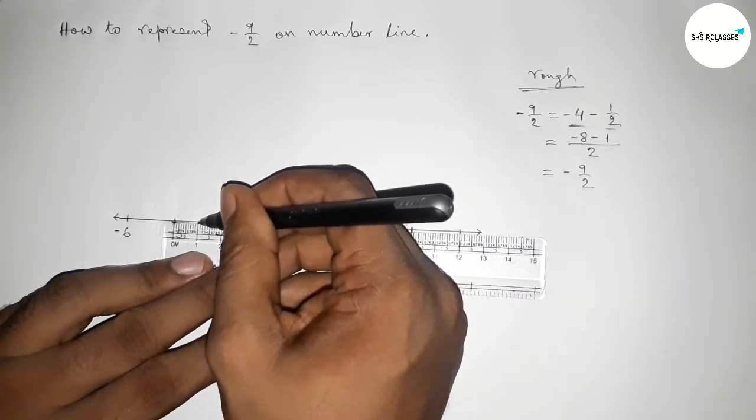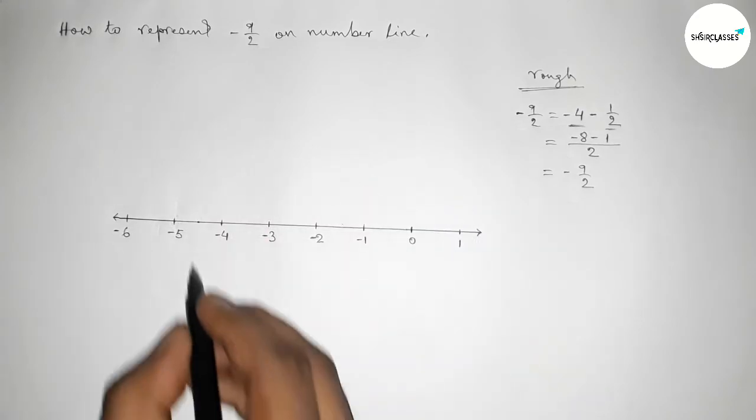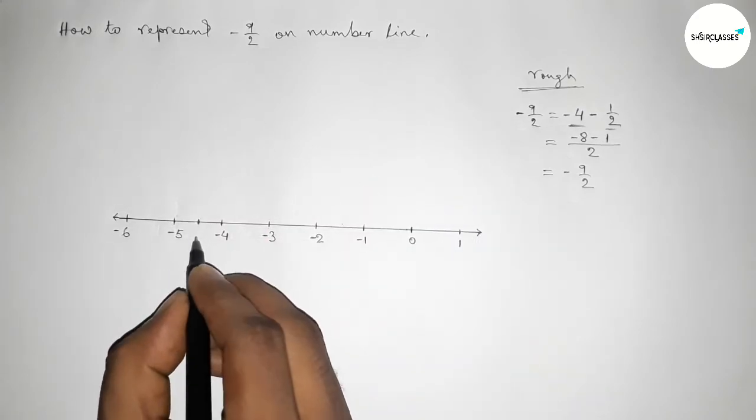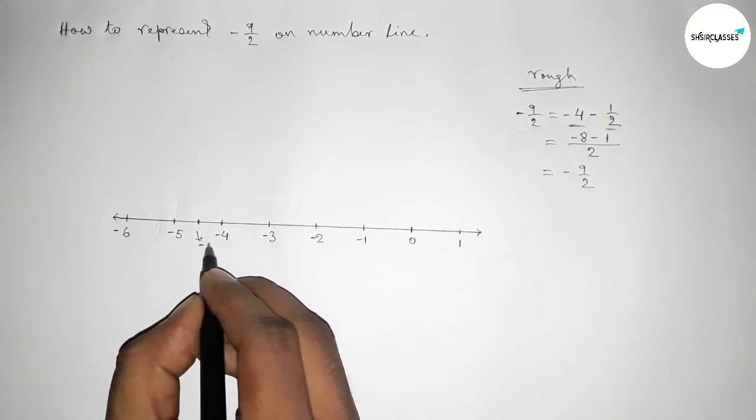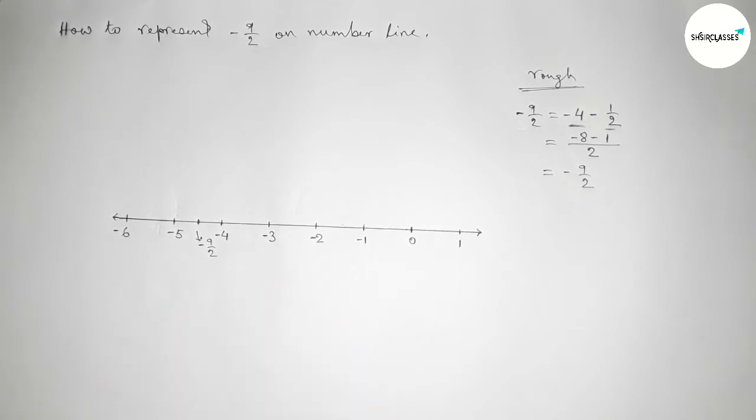So this is the middle between minus four and minus five. Okay, so marking this with different color and this is minus nine by two on number line.